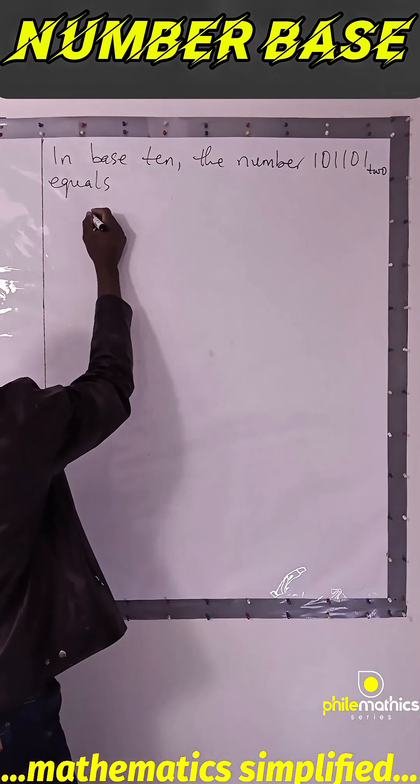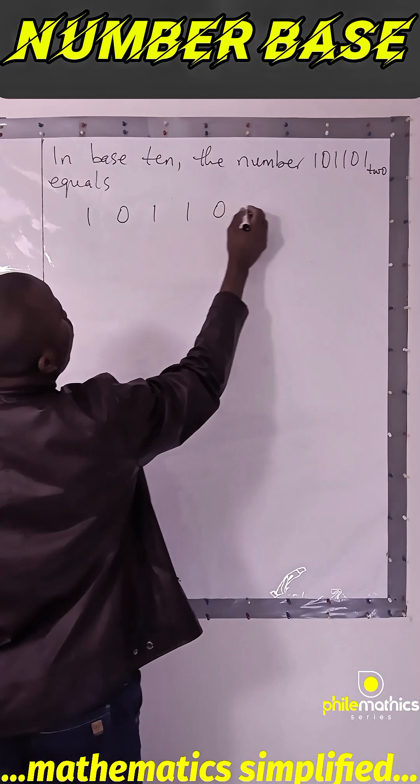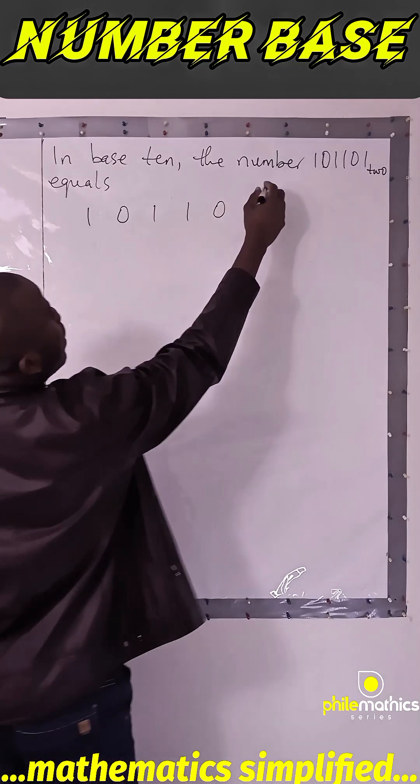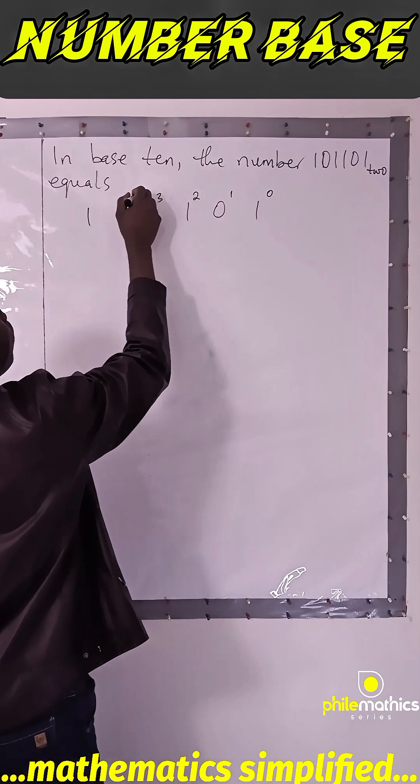I will write the number 101101. We put the index. This is to power 0. This is 1, 2, 3, 4, 5.